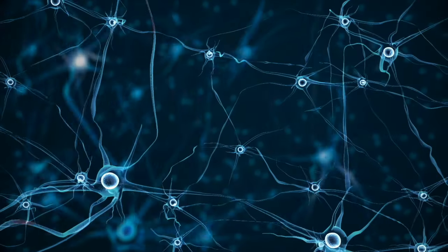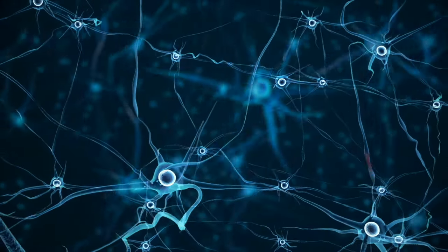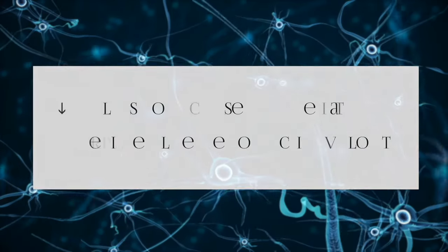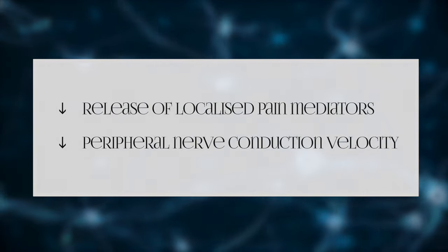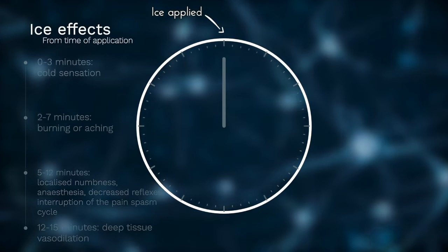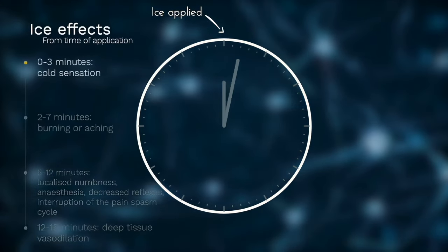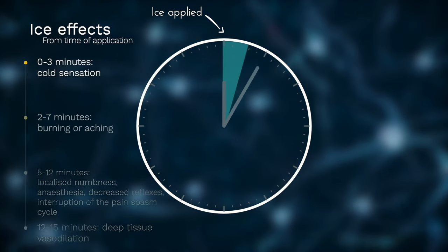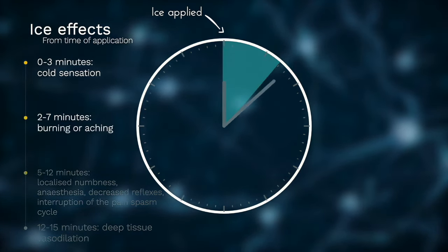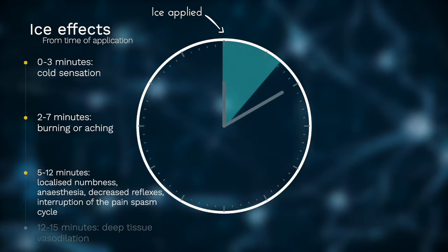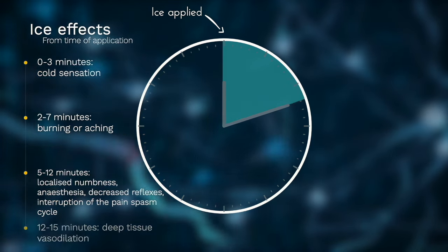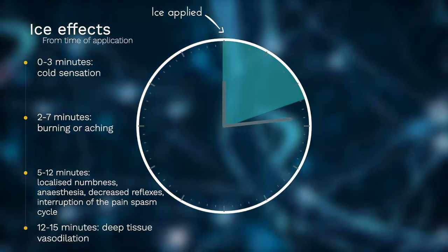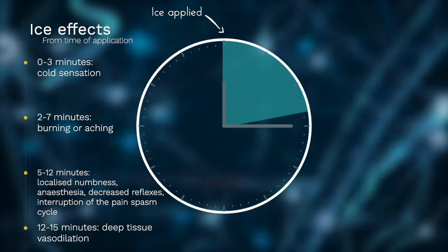The neural effects of ice application are thought to be mediated by effects at the tissue level and include decreased release of localised pain mediators and a slowing of peripheral nerve conduction velocity. From the time ice is initially applied, you get the initial cold sensation around 0–3 minutes, burning or aching around 2–7 minutes, localised numbness, anaesthesia, decreased reflexes, interruption of the pain-spasm cycle around 5–12 minutes, and finally deep tissue vasodilation not accompanied by increased metabolism around 12–15 minutes.